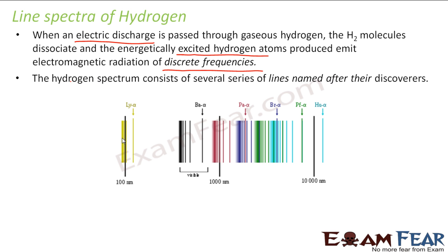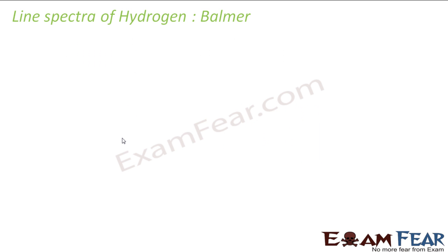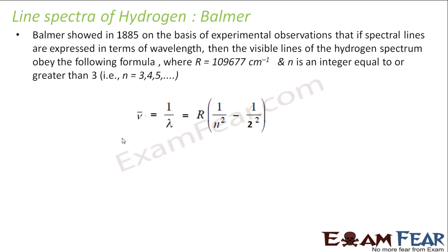The hydrogen spectrum consists of several series of lines named after their discoverers. Different scientists studied the line spectra of hydrogen and kept discovering new series of lines. The lines they discovered were named after them, and that is how each set of lines was given a specific name in the hydrogen spectra. The first one we will discuss is the Balmer series. Balmer was the first scientist who discovered a series of lines in the spectra of hydrogen. In 1895, based on experimental observations, he found that the visible lines of the hydrogen spectrum obey a specific formula, and these visible lines were named the Balmer series.